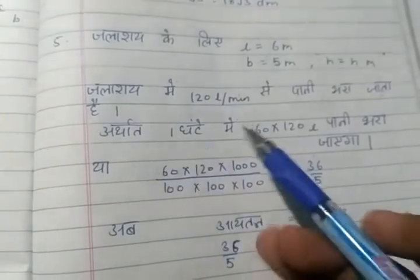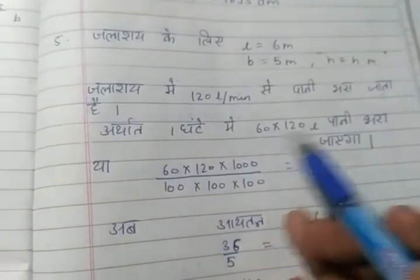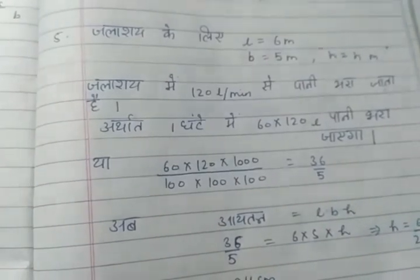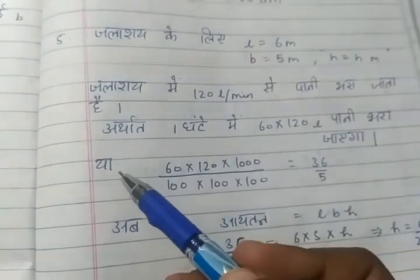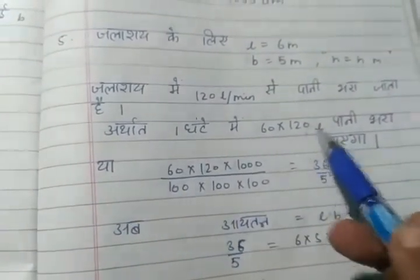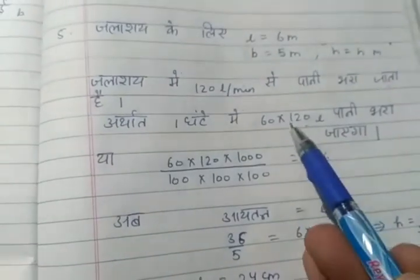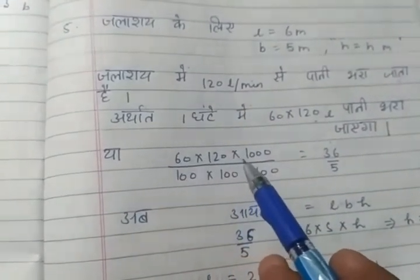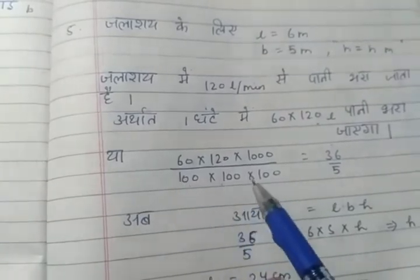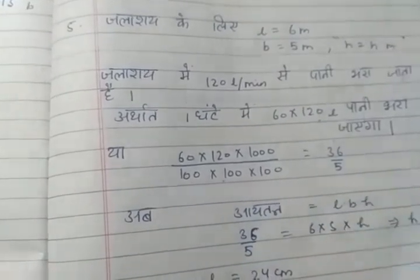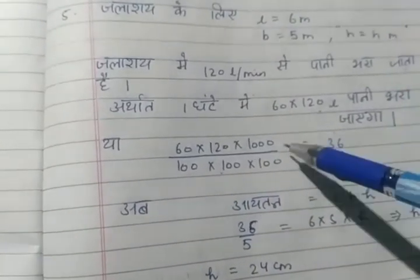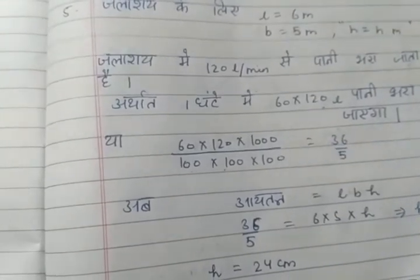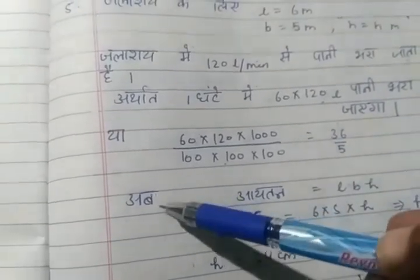The first thing asked is at 120 liters per minute. In 1 hour, 60 × 120 liters of water will be filled. Now we have to change this to simplify. So this will be 60 × 120 × 1000 divided by 100 × 100 × 100. We have to change this unit.